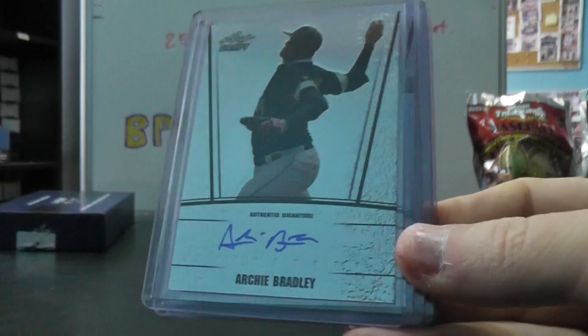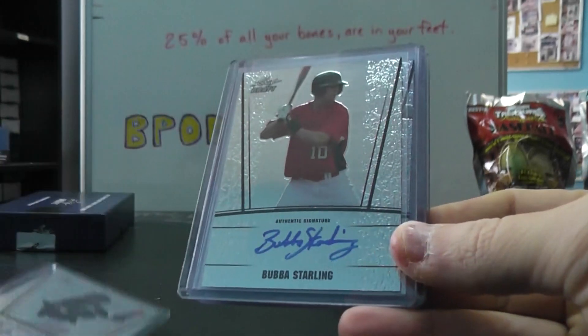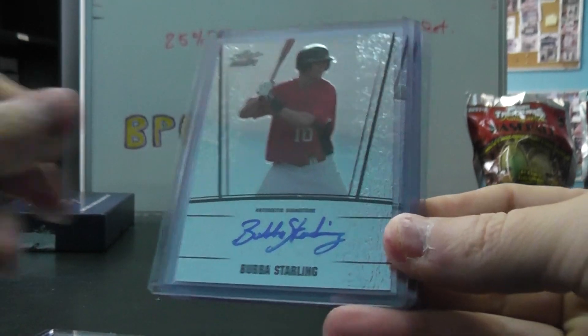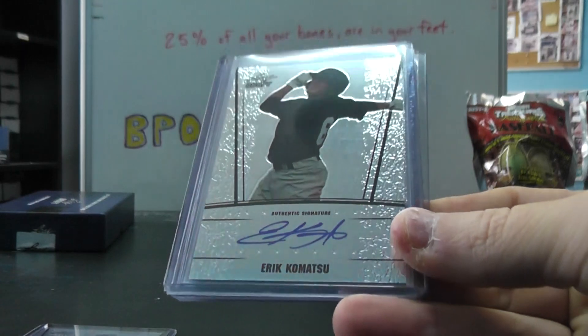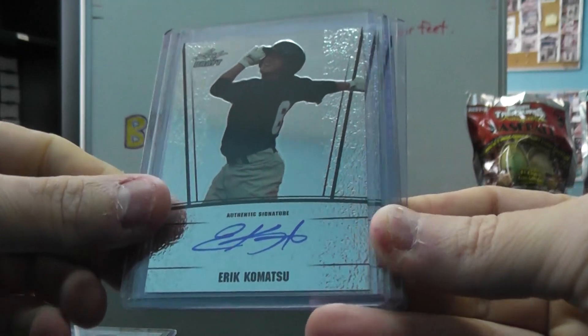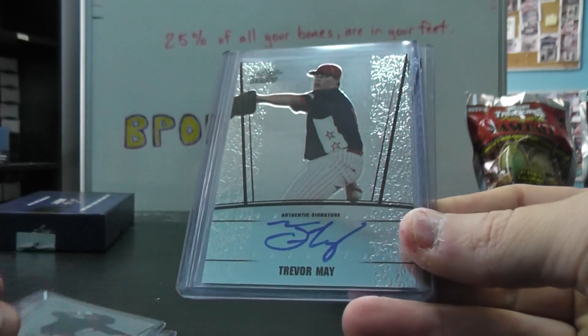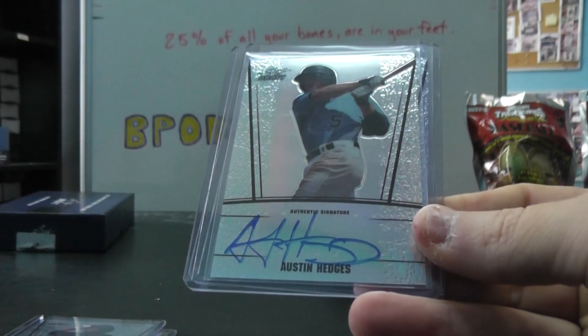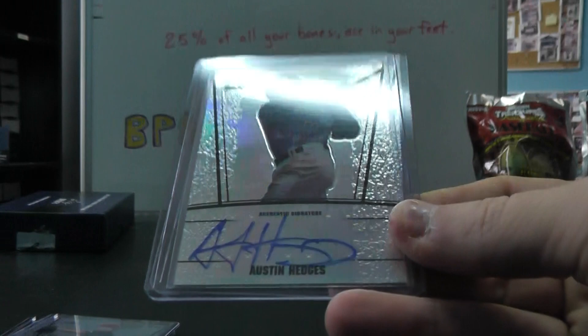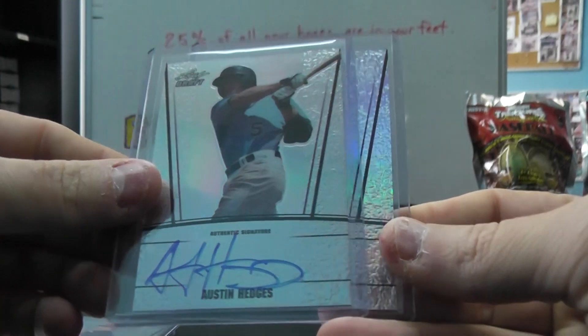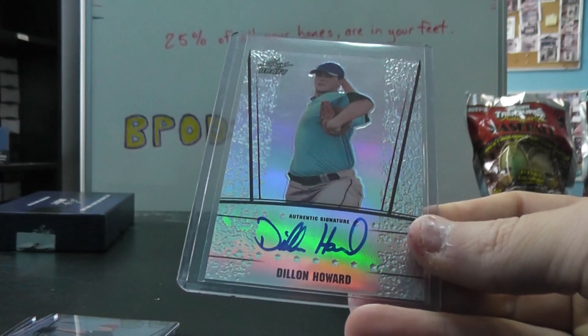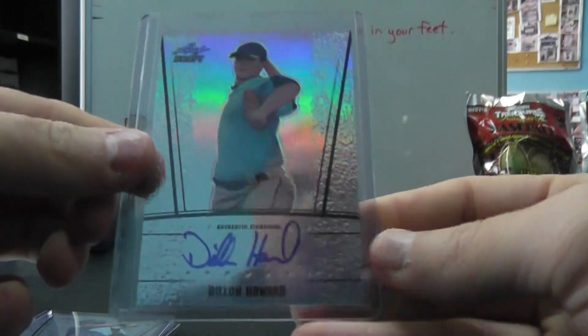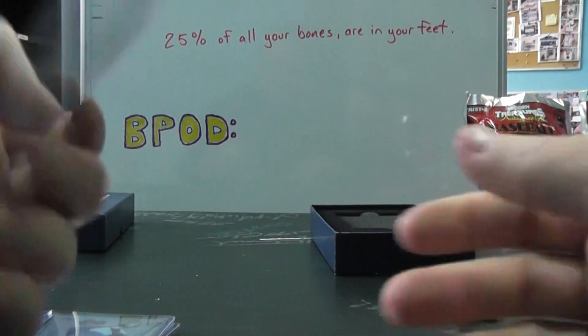We have Archie Bradley autograph. Bubba Starlin, nice, autograph. Eric Kamatsu. I don't think these are numbered. Trevor May autograph. Austin Prudhomme. And Dylan Howard, that one is to 99. Dylan Howard autographed and numbered to 99.